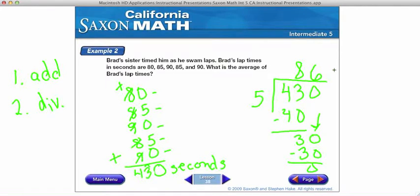So an average of 86 seconds. So Brad's lap time average was 86 seconds.